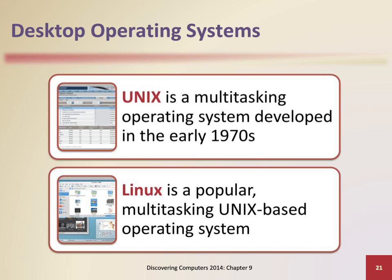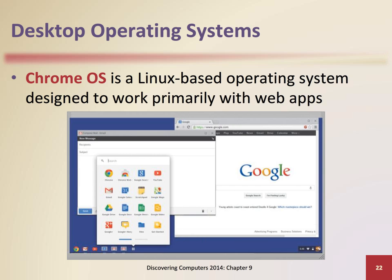Linux is open source software and is available for both standalones and networks. Linux is available with a command-line interface and with a graphical user interface. Chrome OS is Google's Linux-based operating system designed to work primarily with web apps.